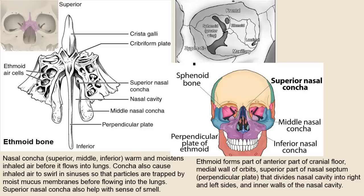The ethmoid also forms part of the anterior cranial floor. I'd recommend going through this lecture a couple of times and pausing to take notes. At first it seems really complicated, but after you spend some time with it, it all makes sense. You just have to trust me — thanks for listening.